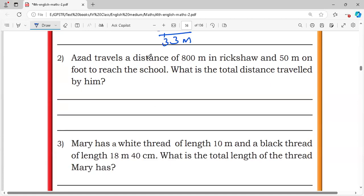Second one. Azad travels a distance of 800 meter in Rickshaw and 50 meter on foot to reach the school. What is the total distance traveled by him? He traveled 800 meter in Rickshaw, 50 meter by walk. 0 plus 5 is 5, 0 plus 8 is 8, equals 850 meter.